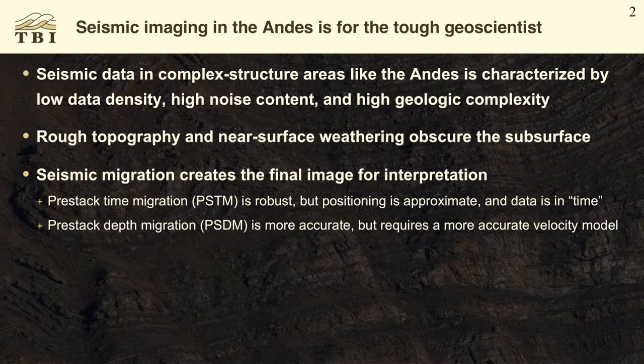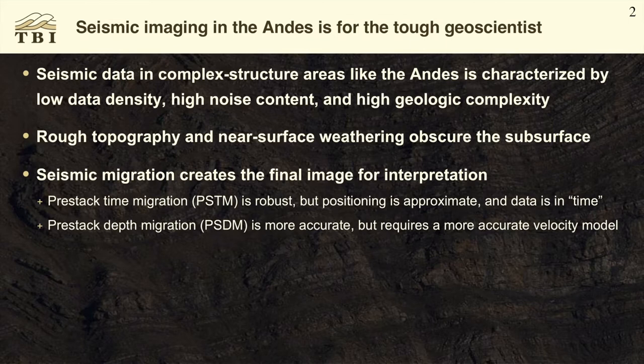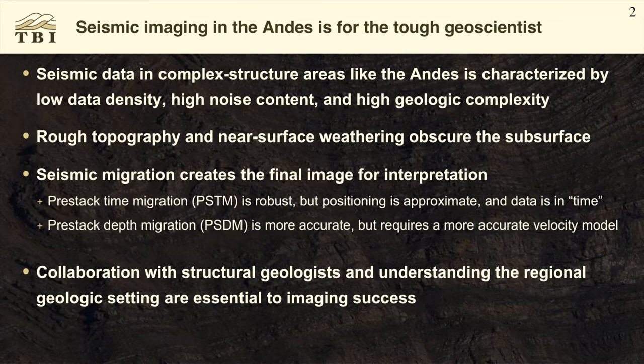When we image those structures, it's seismic migration that creates the final image for interpretation. Pre-stack time migration, or PSTM, is the robust method in our toolkit, but the positioning is approximate and the data is in time. We want to see the structure in depth. Pre-stack depth migration, on the other hand, is more accurate, but it requires a more accurate velocity model — it's a more delicate process. So we need collaboration with a structural geologist and a seismic interpreter, and an understanding of the regional geologic setting, in order to get imaging success in these areas.